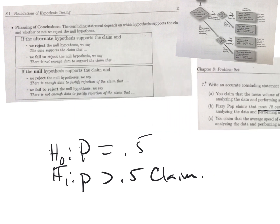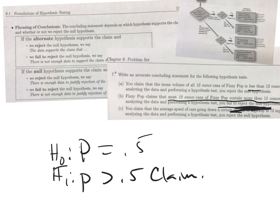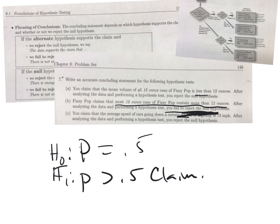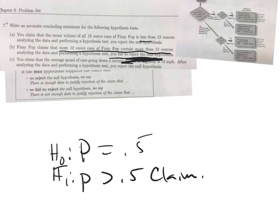H1 is the claim, so I'm going to look at this section for the alternative hypothesis. We fail to reject the null hypothesis, so there's not enough data to support the claim that most Fizzy Pop cans contain more than 12 ounces. See how that works?